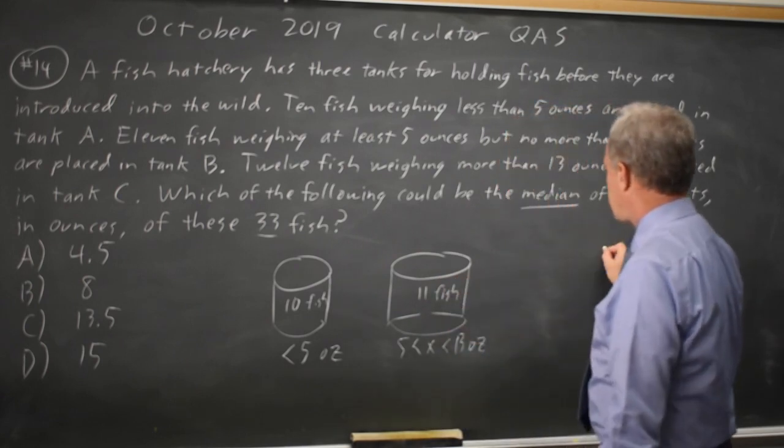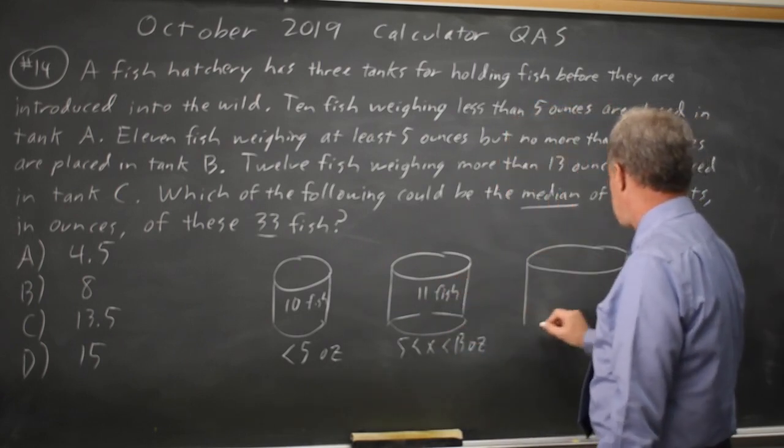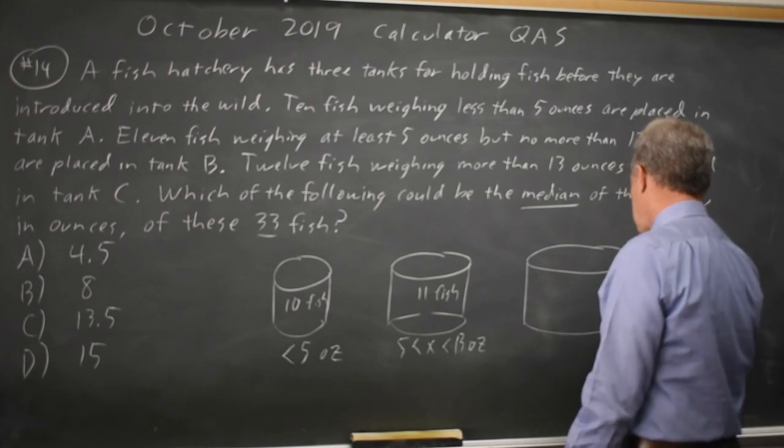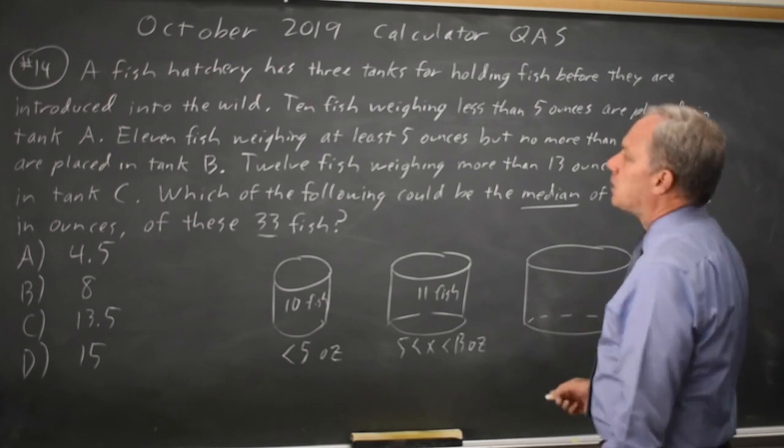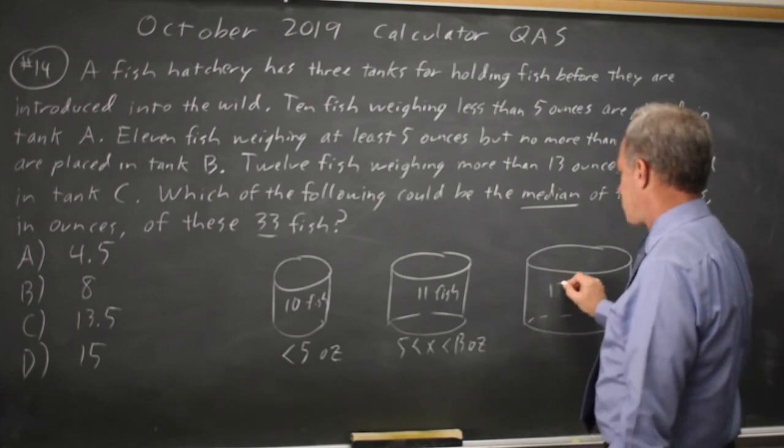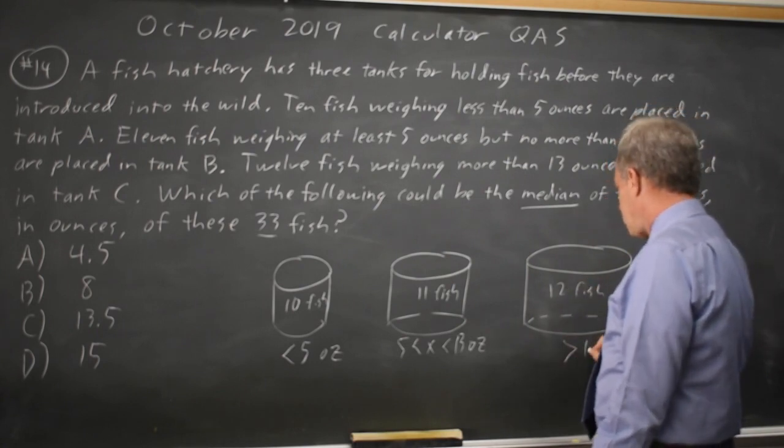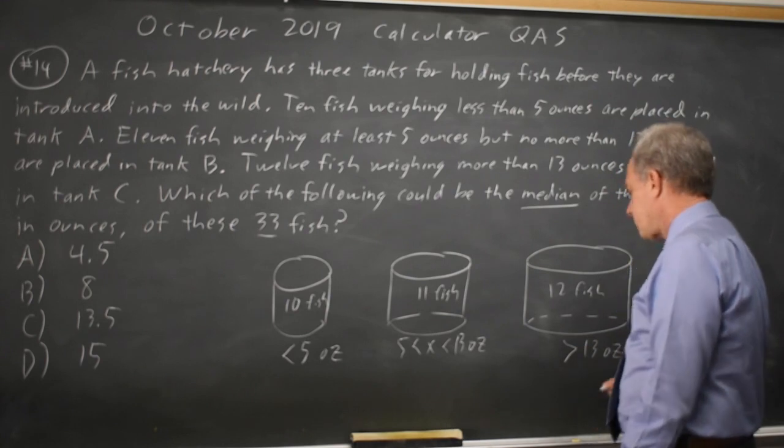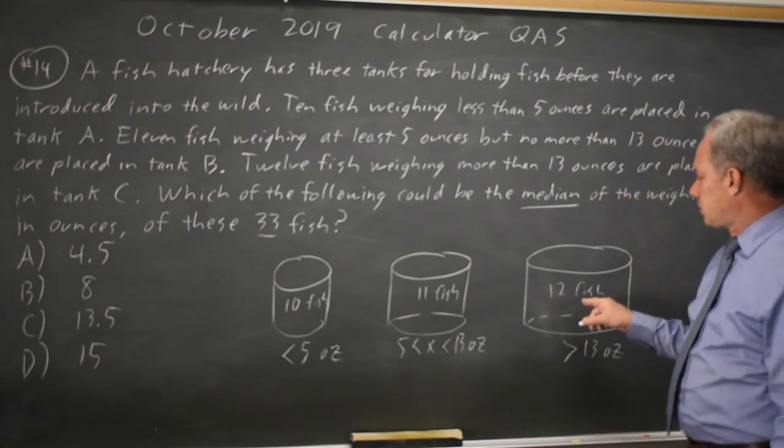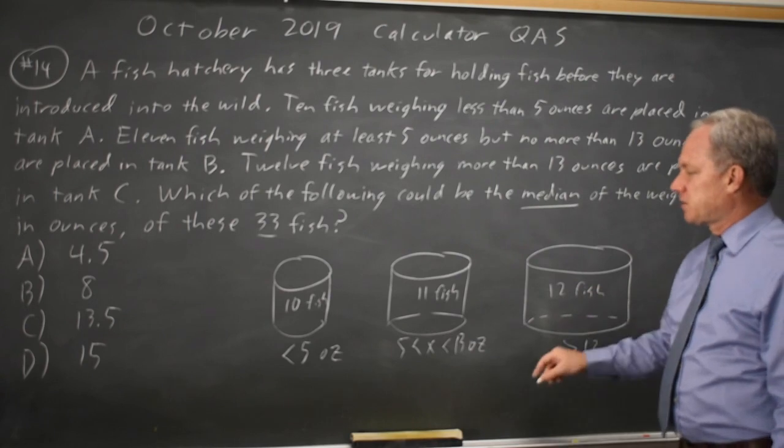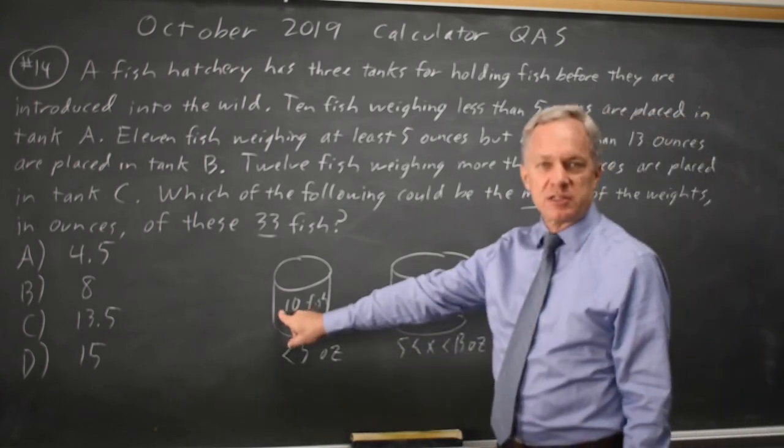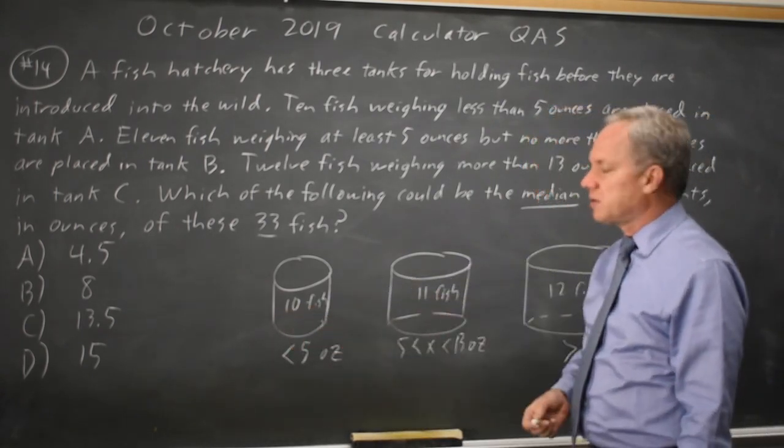And I have a third tank for larger fish that has 12 fish, and this is greater than 13 ounces. So all of these are greater than 13 ounces, all these are less than 5 ounces, and these are between the two values.